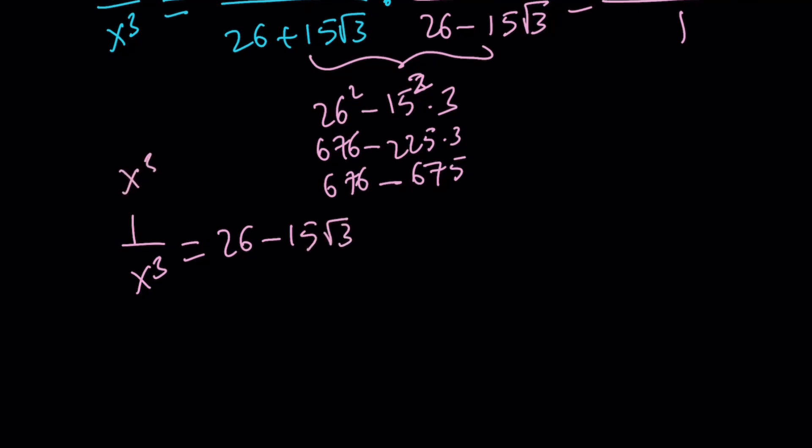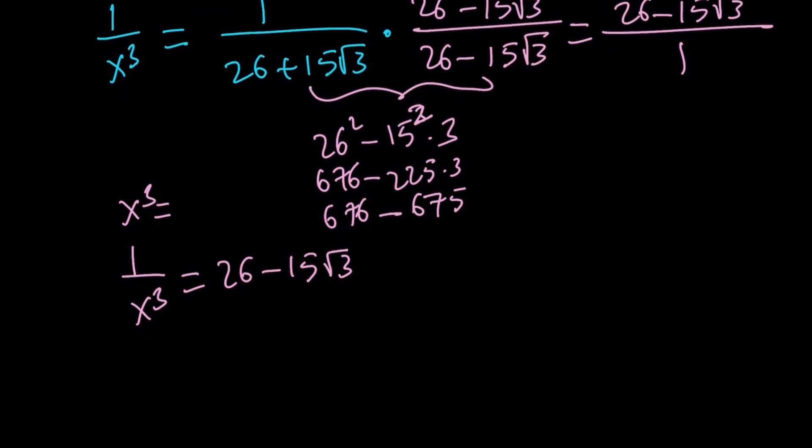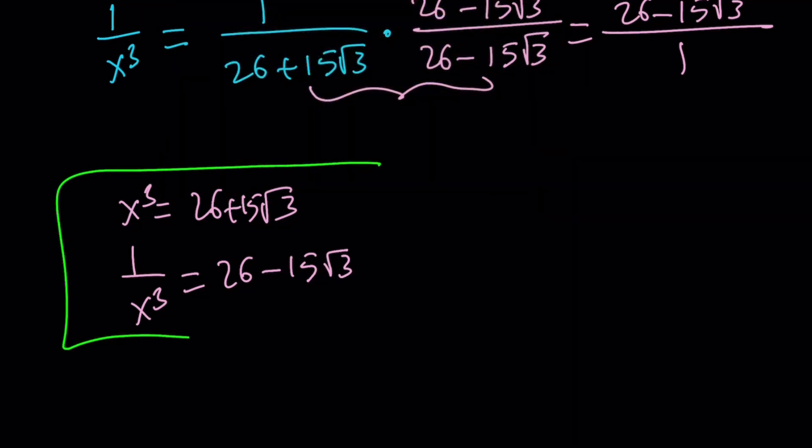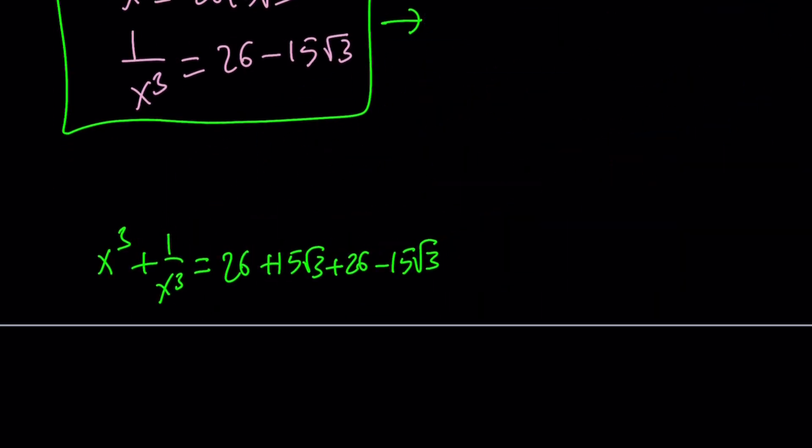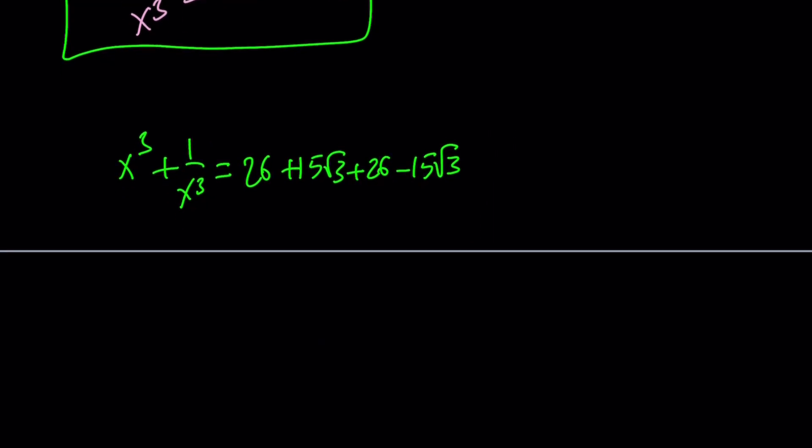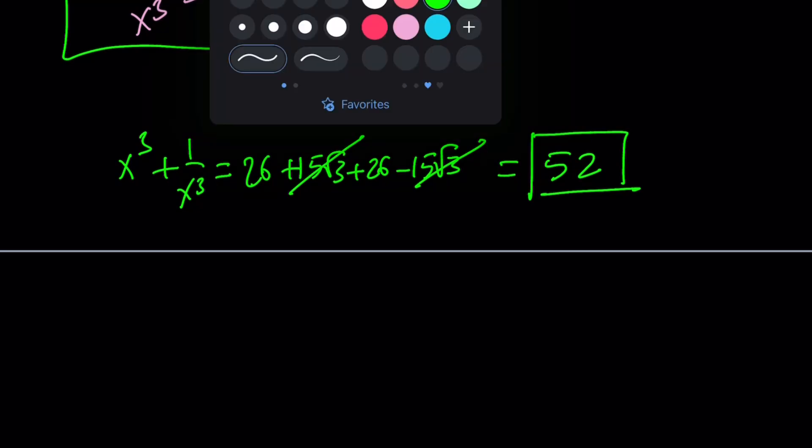So that's our 1 over x cubed, and x cubed is 26 plus 15 root 3. We have these two things. We're going to go ahead and add them. So x cubed plus 1 over x cubed is just going to be the sum of these two expressions: 26 plus 15 root 3 plus 26 minus 15 root 3. 15 root 3 cancels out, and we end up with 26 plus 26, which is equal to 52. So we got 52 by adding these two expressions. Let's go ahead and take a look at the second method.